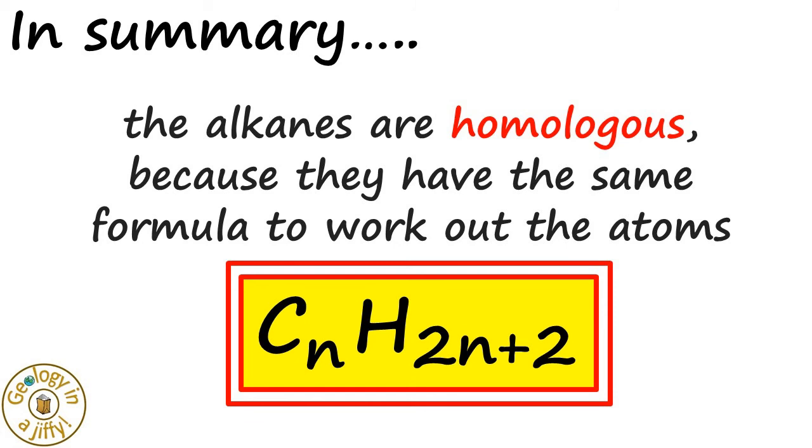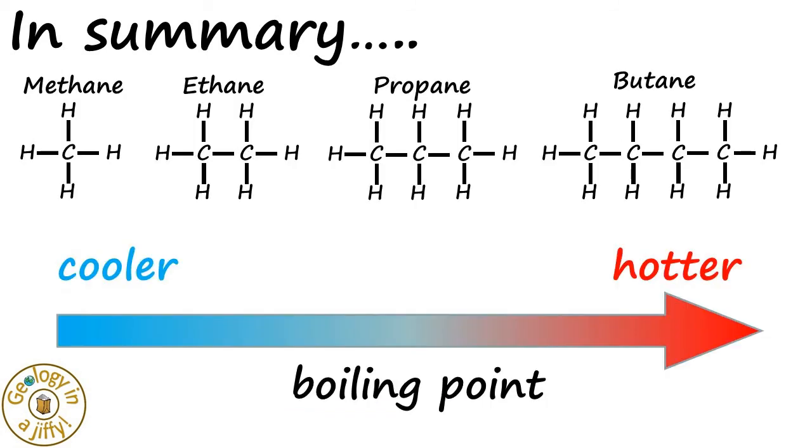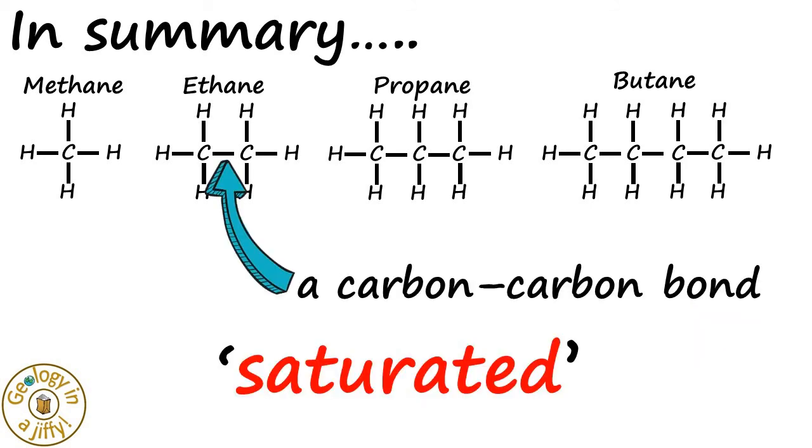They show a variation in properties as the molecules get longer. For example, their boiling points increase as the molecules get longer. We say that alkanes are saturated, as they have the maximum number of hydrogen atoms on them, due to the carbon-carbon single bonds.